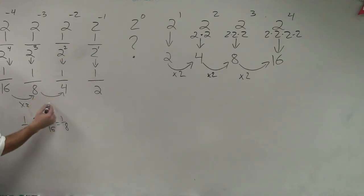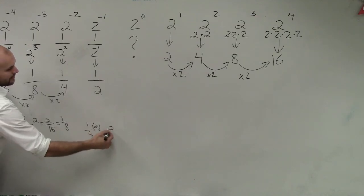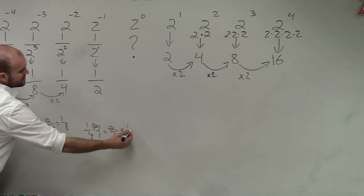So over here again, you're multiplying by 2. 1 fourth times 2 is what? 2 over 4, which equals 1 half.